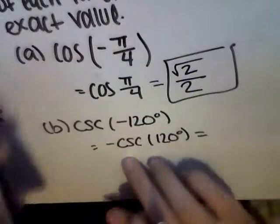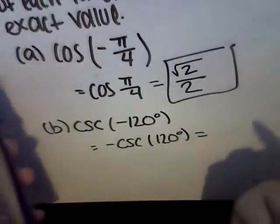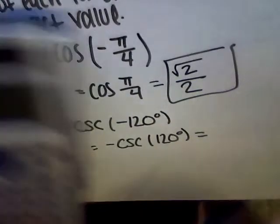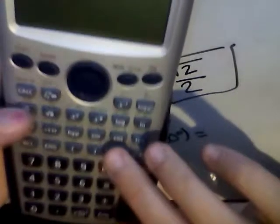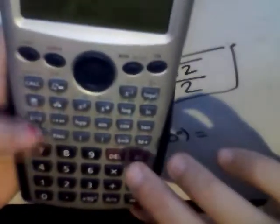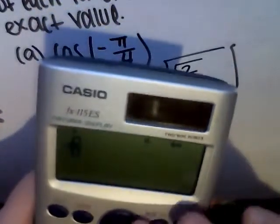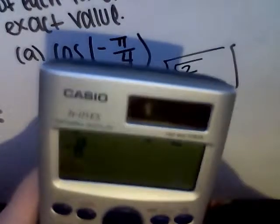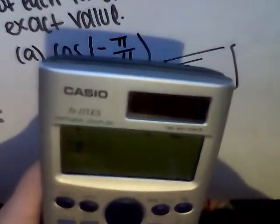So secant is actually 1 over sine. What we're going to do, since it's negative, we're going to put a negative sign up there. So we have negative 1 over sine. We want to make sure we're in degrees though. 120 degrees.